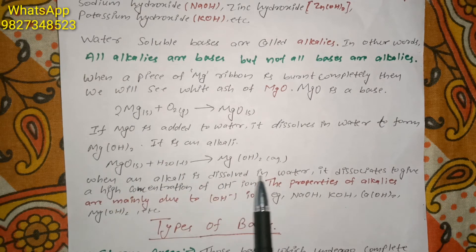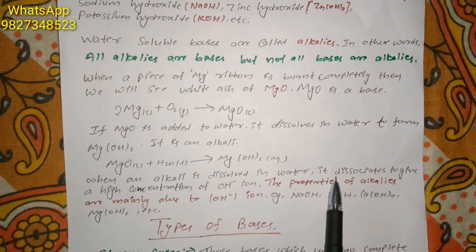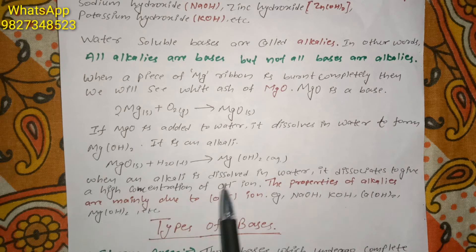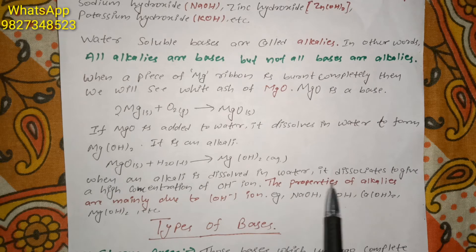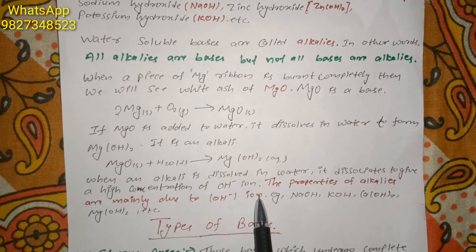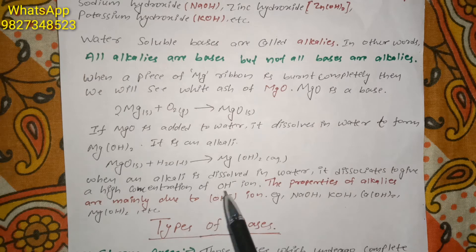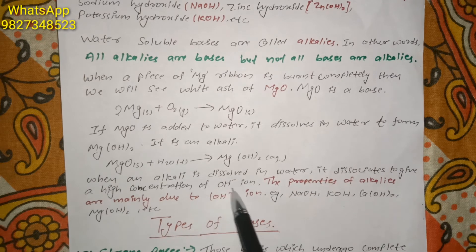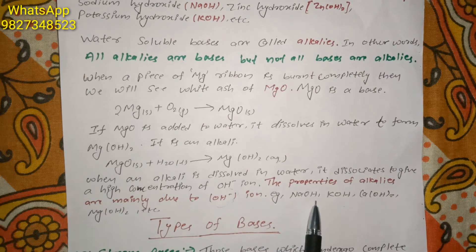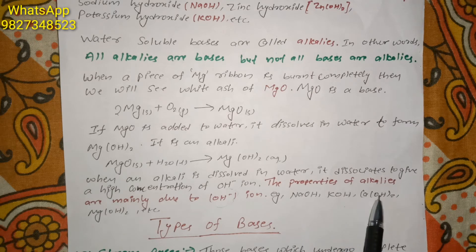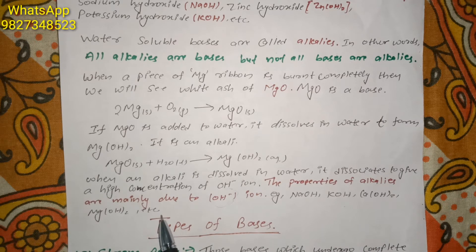When an alkali is dissolved in water, it dissociates to give a high concentration of OH minus ions. The properties of alkalis are mainly due to OH minus ions, also called hydroxyl ions. Examples of alkalis include sodium hydroxide, potassium hydroxide, calcium hydroxide, and magnesium hydroxide.